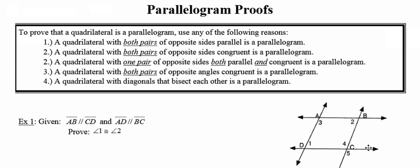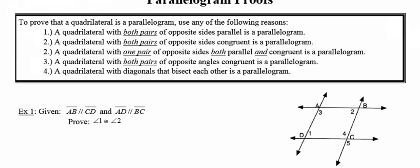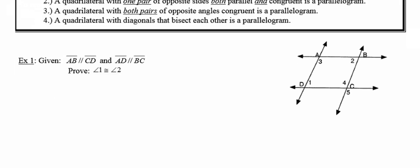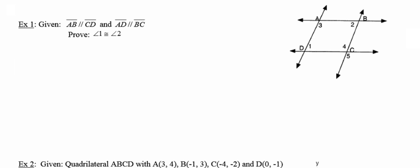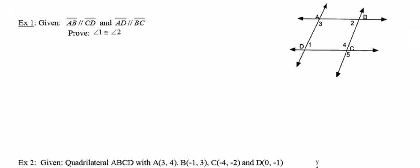So let's take a look at how we might use some of these reasons in proofs. In the very first example, we're given that lines AB and CD are parallel and that lines AD and BC are parallel. So I'm going to go ahead and mark those in my proof — top and bottom are parallel, as are the left side and right side.